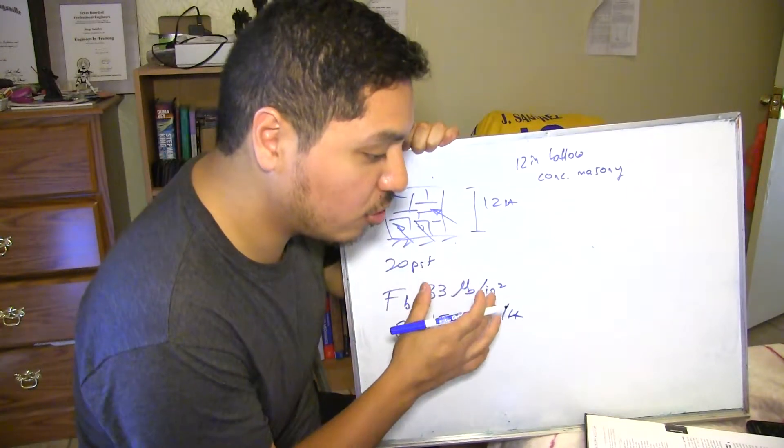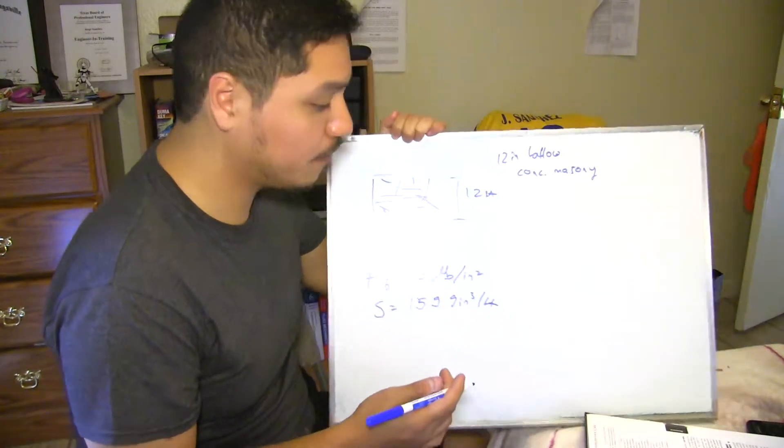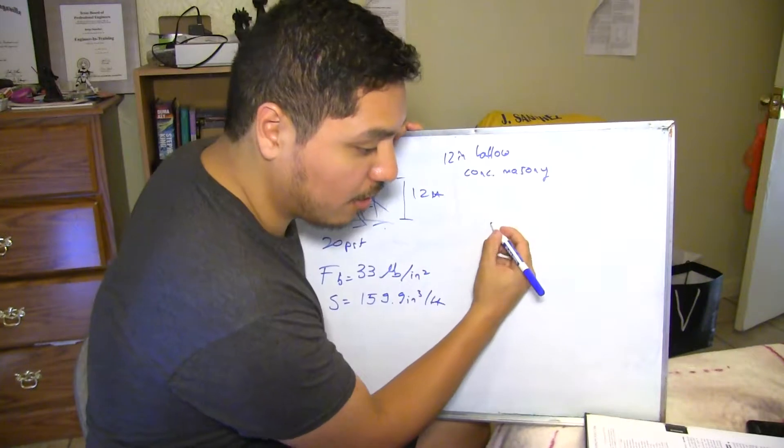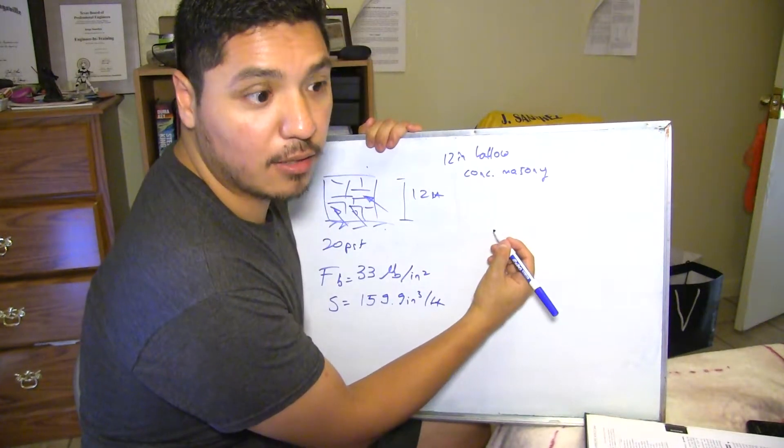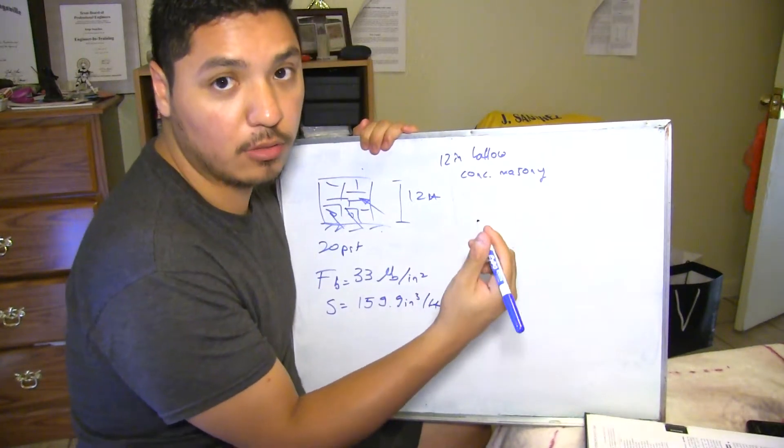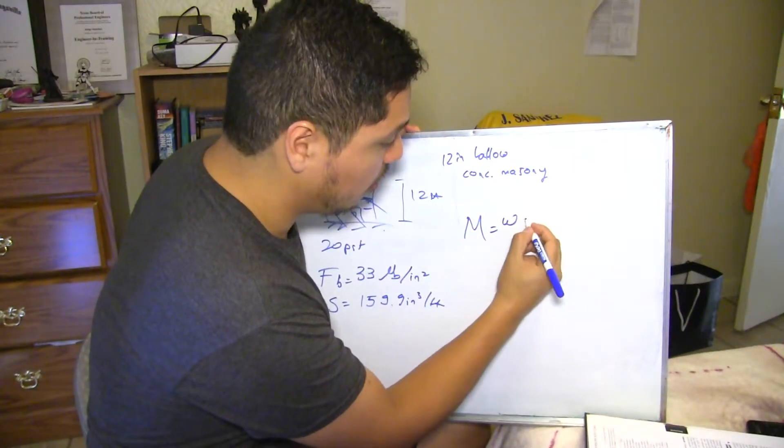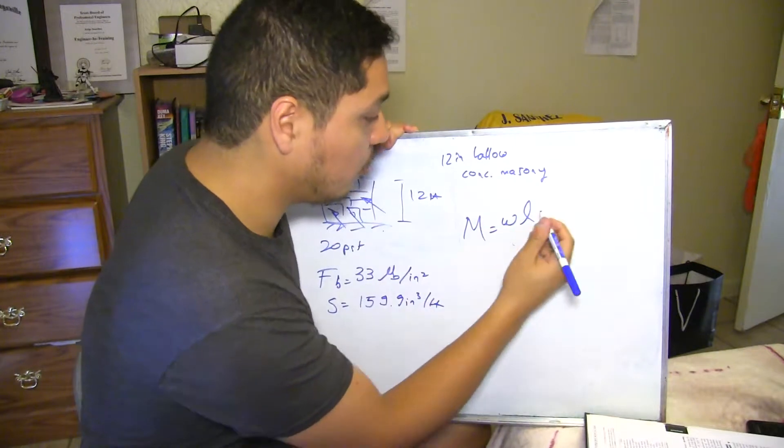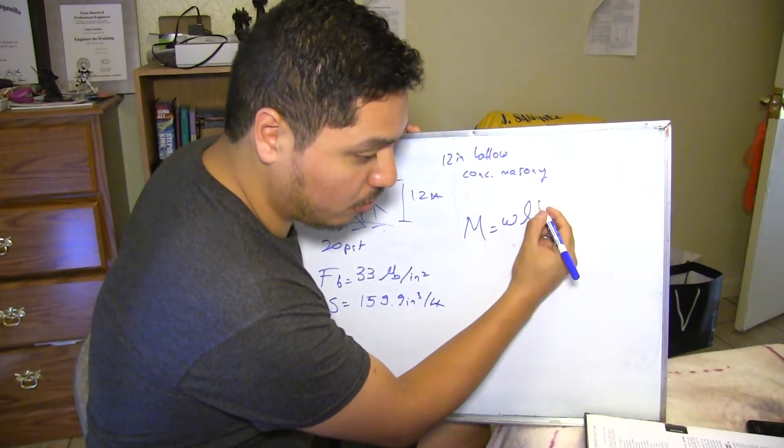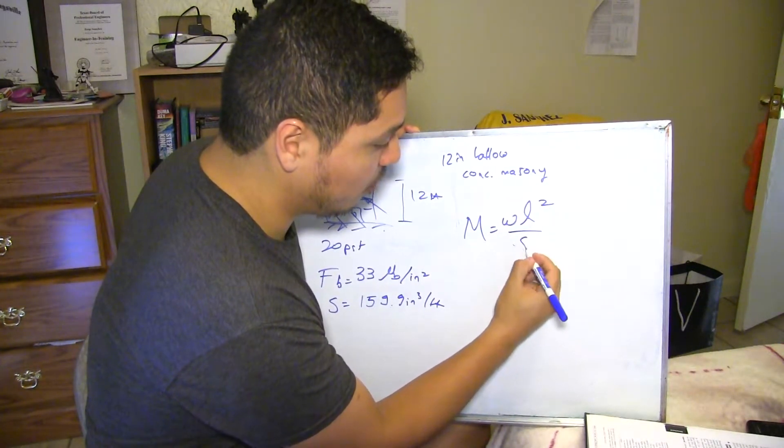Now with this value, what you're going to do is you're going to get your maximum moment. And it's pretty simple. You can get this in structural formulas, the book that I talked about. You get your maximum moment is going to be your W, your load on top of the beam, over the length over 8.